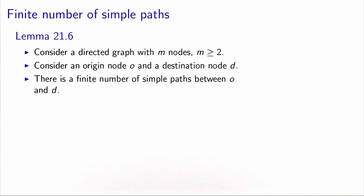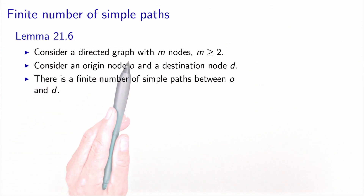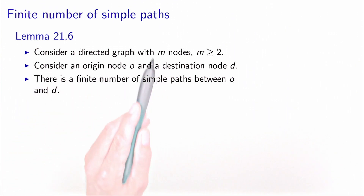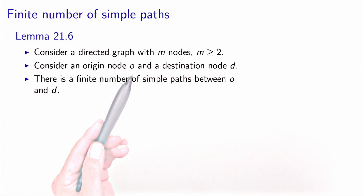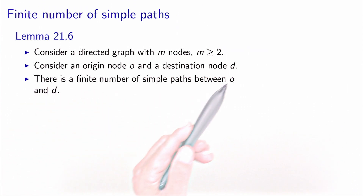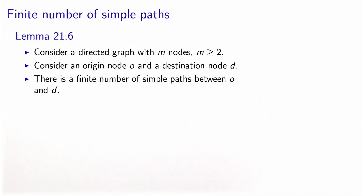The second result states that in a directed graph, the number of simple paths is finite. We consider a directed graph with m nodes, where there are at least two nodes, and we consider an origin O and a destination D. Between O and D, there is a finite number of simple paths.